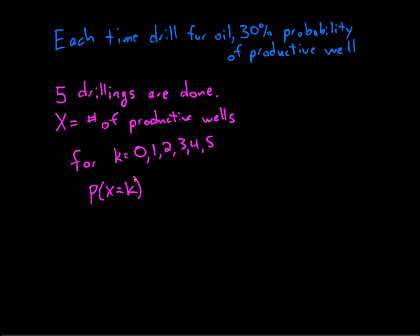The probability that I get a certain one of these values k is, well let's see, I'm going to work with the one minus p and the p first. So I will have a 0.7 for the one minus p. That's the probability that a particular drilling is not productive.